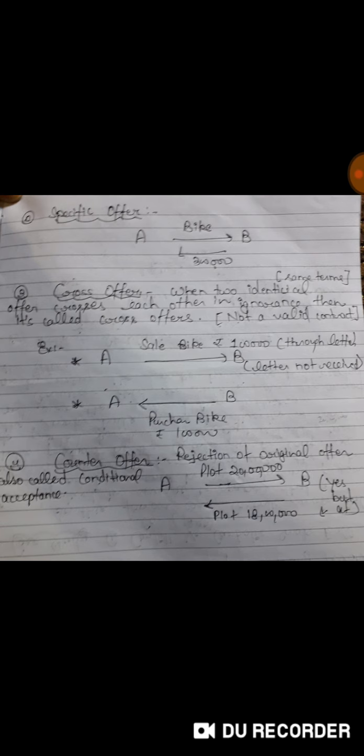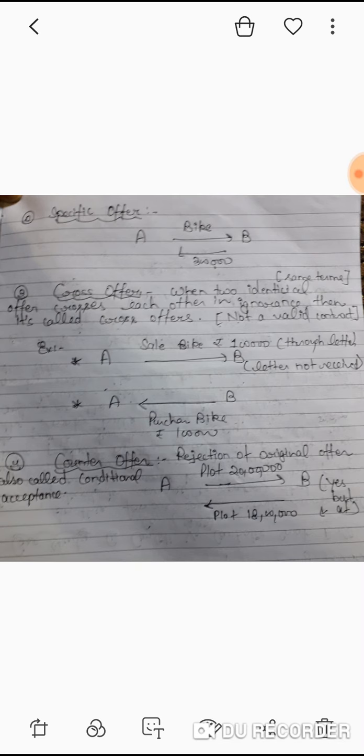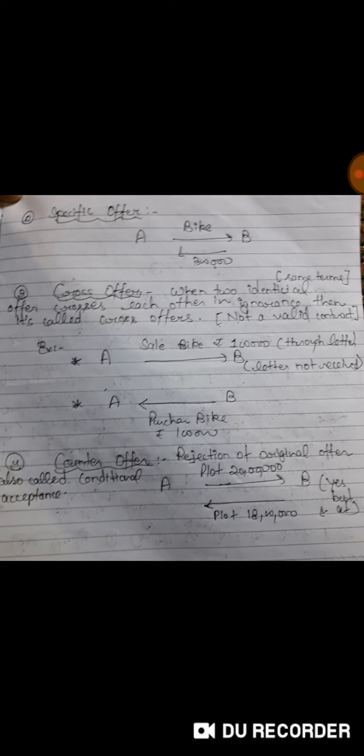As I earlier told you, specific offer is given to a specific or particular person. That is a specific offer. For example, A is giving offer to B for purchase of bike for rupees 3 lakh, and B accepts A's proposal.